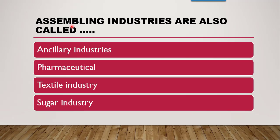The next question is: assembling industries are also called as — ancillary industry, pharmaceutical industry, textile industry, or sugar industries. The correct answer is ancillary industries. Assembling industries are also known as ancillary industries because their prime concern is to assemble parts and from those parts make products — for example, production of cars, different vehicles, various machines like ECG machines, X-ray machines, and televisions. These products are made up of different parts, and assembling them into a utilizable product is the work of assembling or ancillary industries.